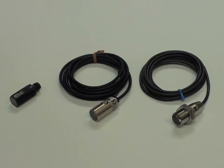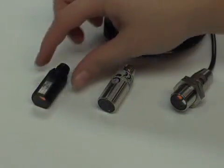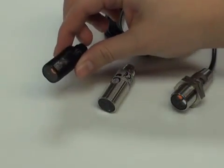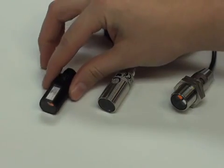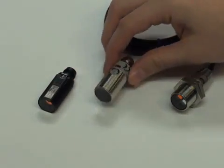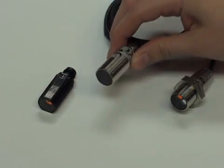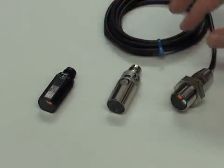All retroreflective models are polarized to prevent false reads on mirrored surfaces. The E3FA is housed in universal M18 cylindrical plastic for standard applications, whereas the E3FB is housed in nickel-plated brass, which provides more durability for high-traffic environments.